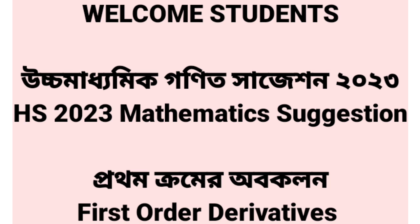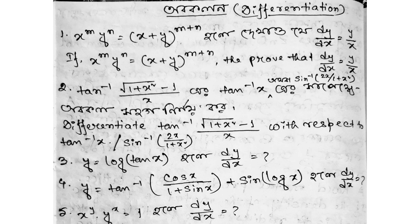The first question is: x to the power m, y to the power n equals x plus y to the power m plus n. Show that dy/dx equals y by x.